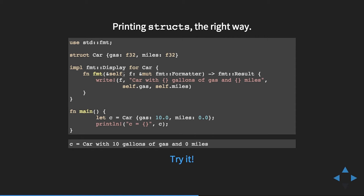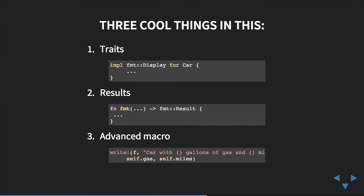We can use pattern matching just as you'd expect — we make a Cruiser and the Millennium Falcon, inspect each, and it prints as expected. Enums also support generics: we can create a 'MyOption' type with variants 'None' or 'Some(T)', where T is a generic type that can be implemented for whatever we want. At compile time, Rust will generate one of these for everywhere it finds it used with a different type.